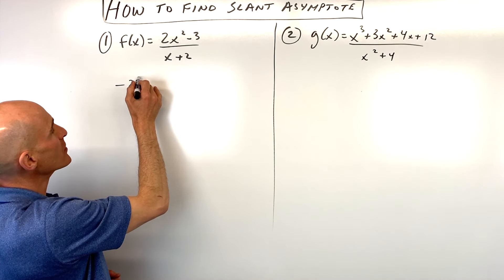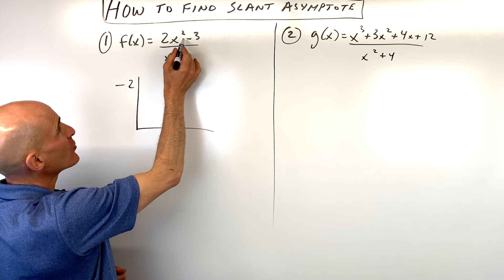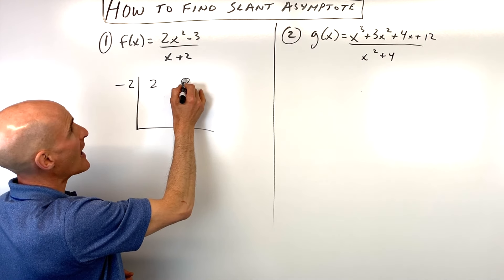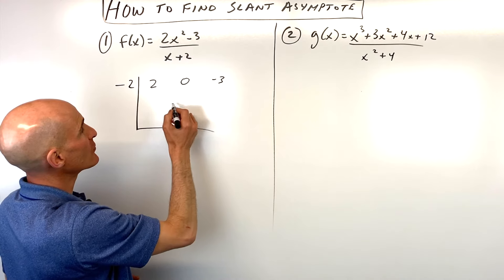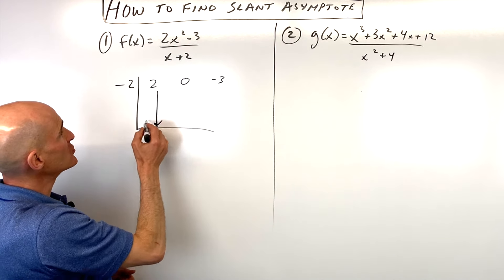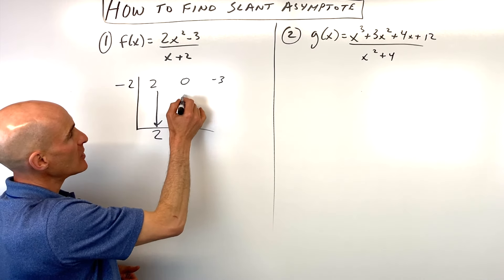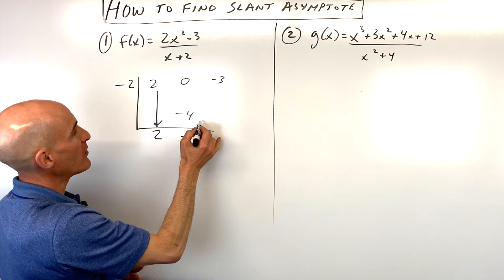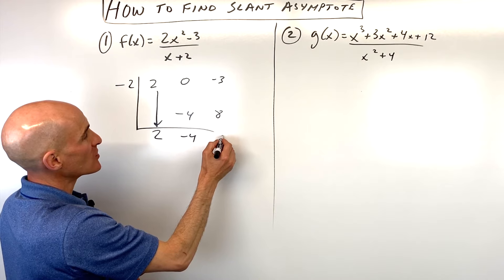And I'm going to put our coefficients in the numerator here: 2x squared, 0x, see there's not an x term, and negative 3. So to do that synthetic division, you drop down that first number, 2, you multiply on the diagonal, you add straight down, you multiply on the diagonal, you add straight down.